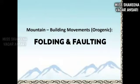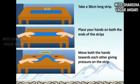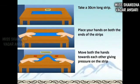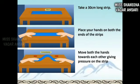Here is another activity. Take a 30-centimeter long strip, place your hands on both ends of the strip, and move both hands towards each other, giving pressure on the strip. As you see, the strip starts getting folded. Assume the strip is the earth's crust and the pressure being applied represents forces from the interior of the earth. As a result, the strip moves and folds are formed. This work is called compression.